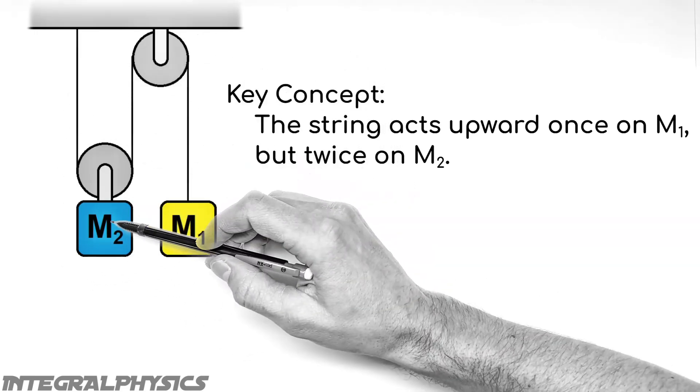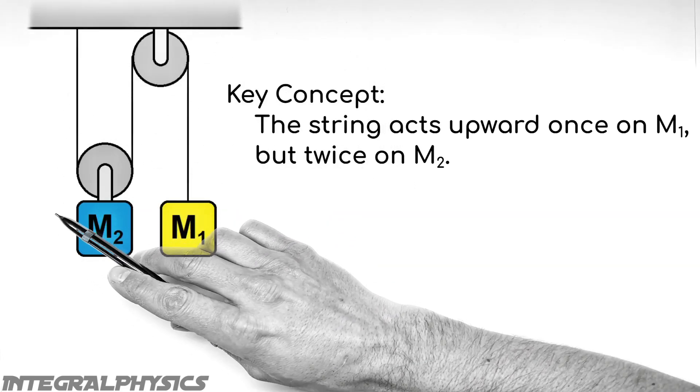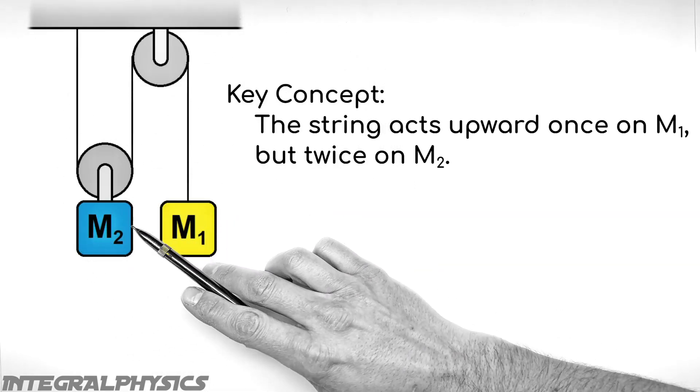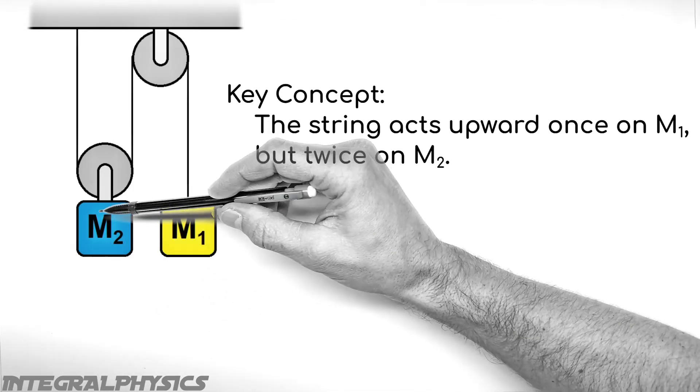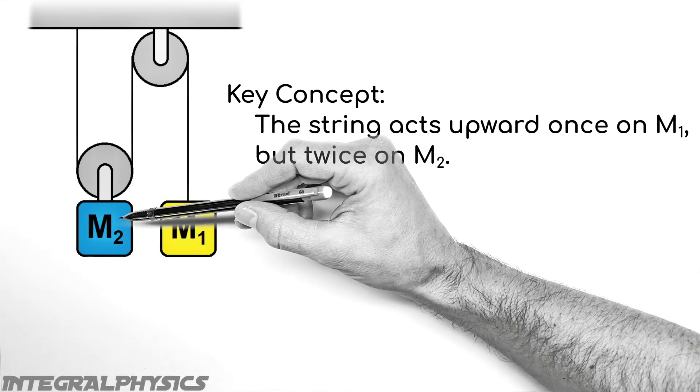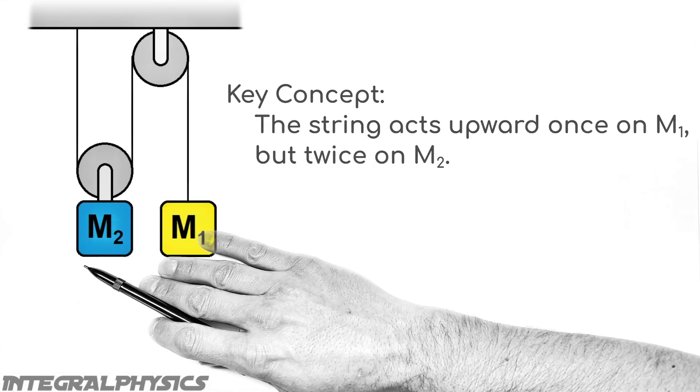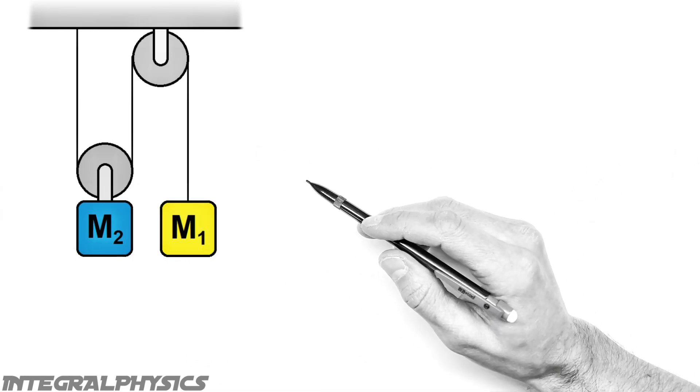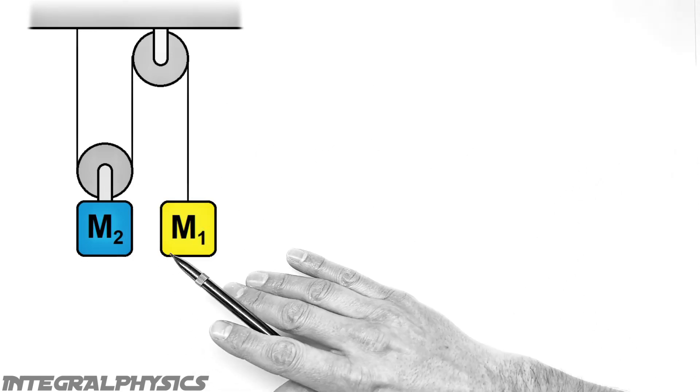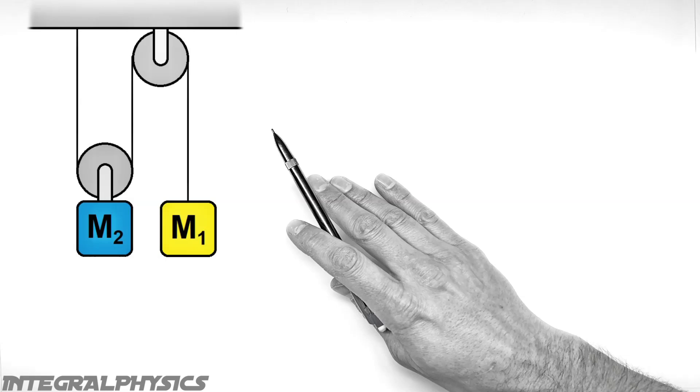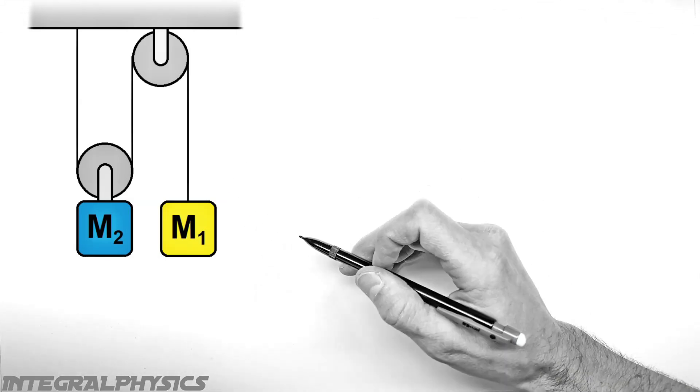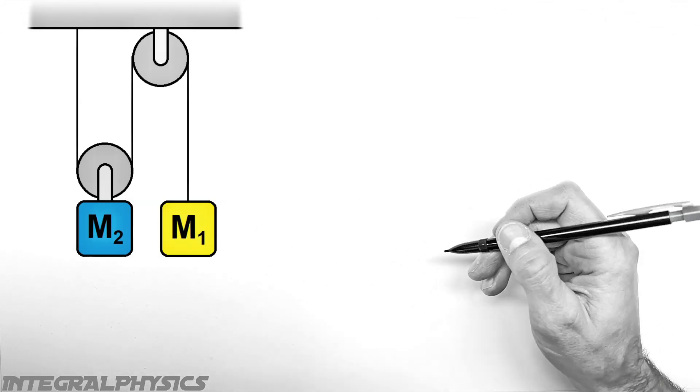You'll see the string actually attaches or touches the pulley at two different points here, one on each side. And that means any tension in the string is going to be acting twice upward on this pulley. Now to solve this problem, what we're going to do is we're going to create a system of equations by looking at each individual block. And then we're going to combine those equations to generate a solution.